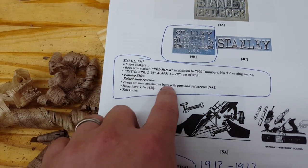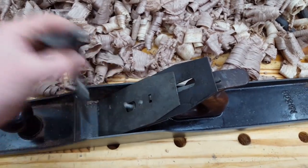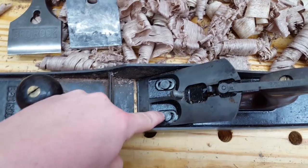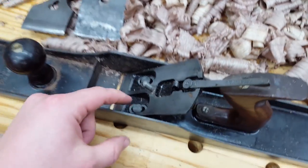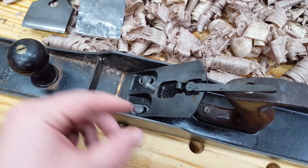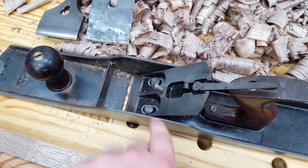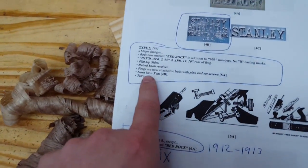Frogs are now attached to the beds with pins and set screws. So there's your pins and then the set screws down there to hold it in place. Inside these pins is a slightly elevated cone shape on the side, so as the pin or as the screws are driven in and they are cone shape on their tip, it pulls the pins down tight to hold the frog to the bed. So that is accurate.